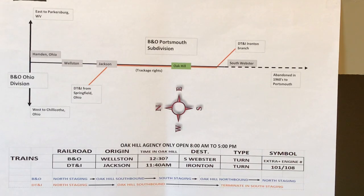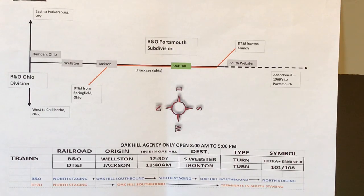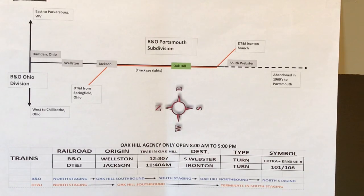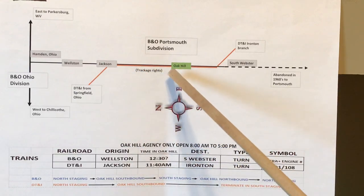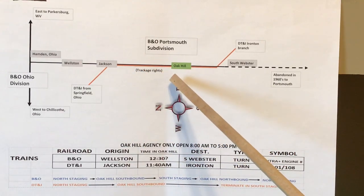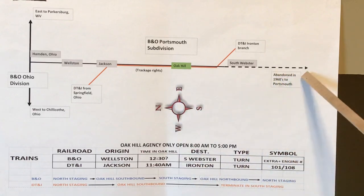I do have one regret — I just kept thinking of the B&O, and the B&O doesn't need very much staging. But the DT&I train is just a run-through train, so the shorter staging limits the length of my DT&I train. I would have liked to have made it another 12 inches, but I'm not going to go back and change it now. The DT&I train is just for show. It's just going to run through Oak Hill, maybe stop at the station to get train orders or something, and terminate in the south staging area.